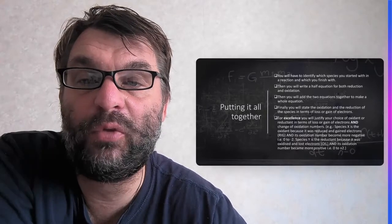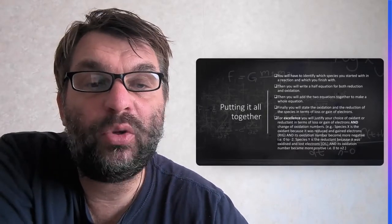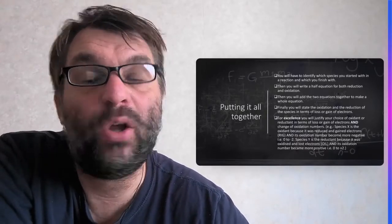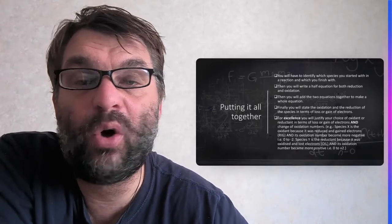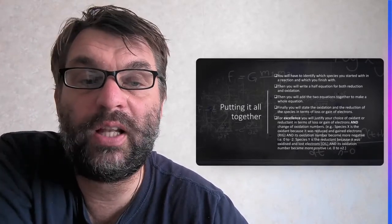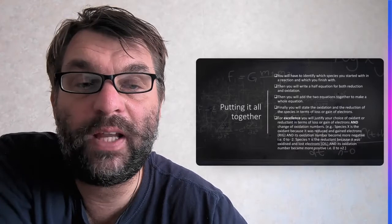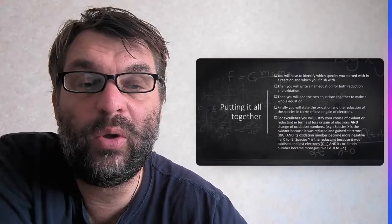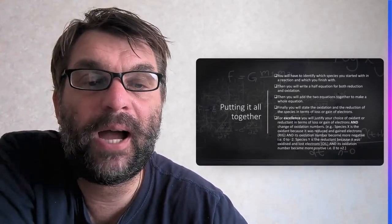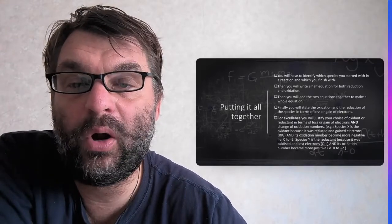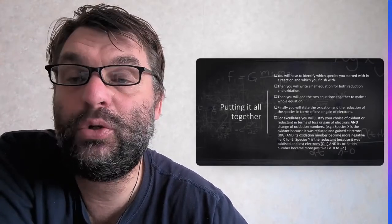Conversely, for species Y, the other species involved in the redox reaction, you'll state that it's a reductant because it has been oxidized, and the reason why it's been oxidized is because it's lost electrons. Oxidation is loss of electrons, and its oxidation number in this example has become more positive, going from zero to plus two.